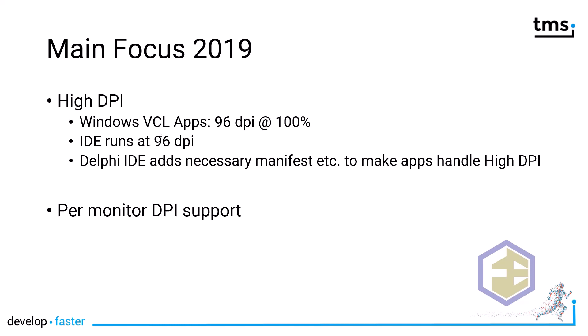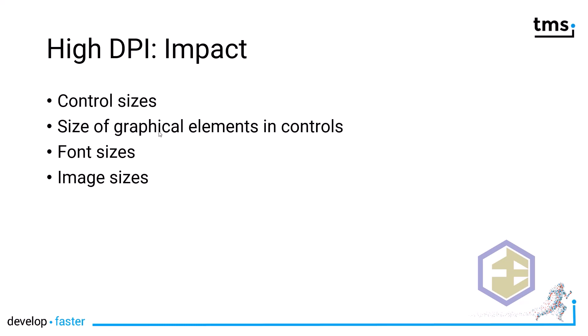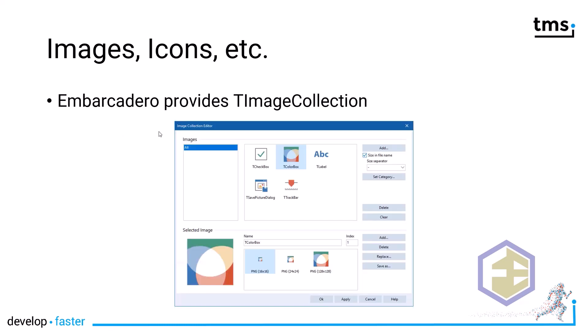All your images will have to be rescaled when you run your application on a high-DPI display. The IDE adds a necessary manifest file to your application, and then window sizes and everything are adapted. However, that does not work automatically for images and icons on your toolbar. Furthermore, if you have multiple displays, not every monitor may have the same DPI setting, so if you move your window between those displays, it has to be rescaled each time. High DPI therefore has an impact on control sizes, graphical element sizes, font sizes, and image sizes. In the latest Delphi release — Delphi Rio — Embarcadero provided a TImageCollection.